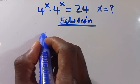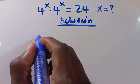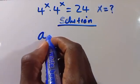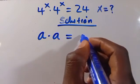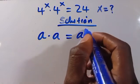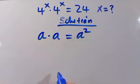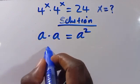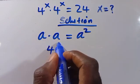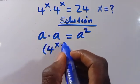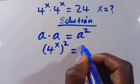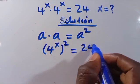Let us recall that when we have a times a, it always equals a to the power of 2. So from here we have 4 to the power of x, and in brackets, to the power of 2, equals 24.